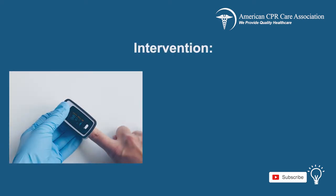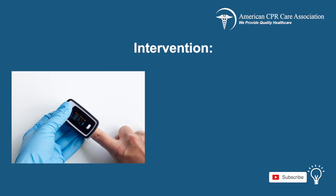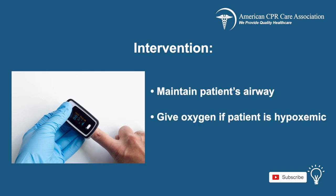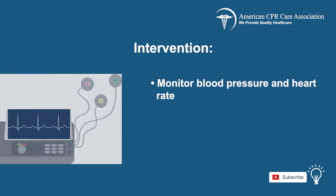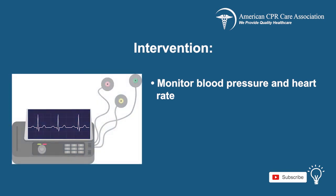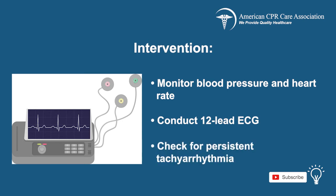Start with interventions. Maintain the patient's airway. Help with breathing and give oxygen if the patient is hypoxemic, and monitor their oxygen saturation. Monitor blood pressure and heart rate, and conduct a 12-lead ECG to diagnose the patient. Check for persistent tachyarrhythmia.